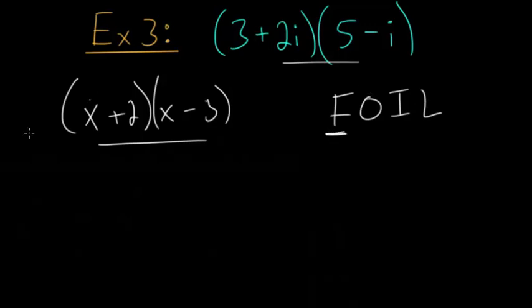So multiplying the first ones together, so that would be the 3 and the 5, so we have 3 times 5. And then now we have the outer ones, so that's 3 times minus i, so that would be minus 3i.